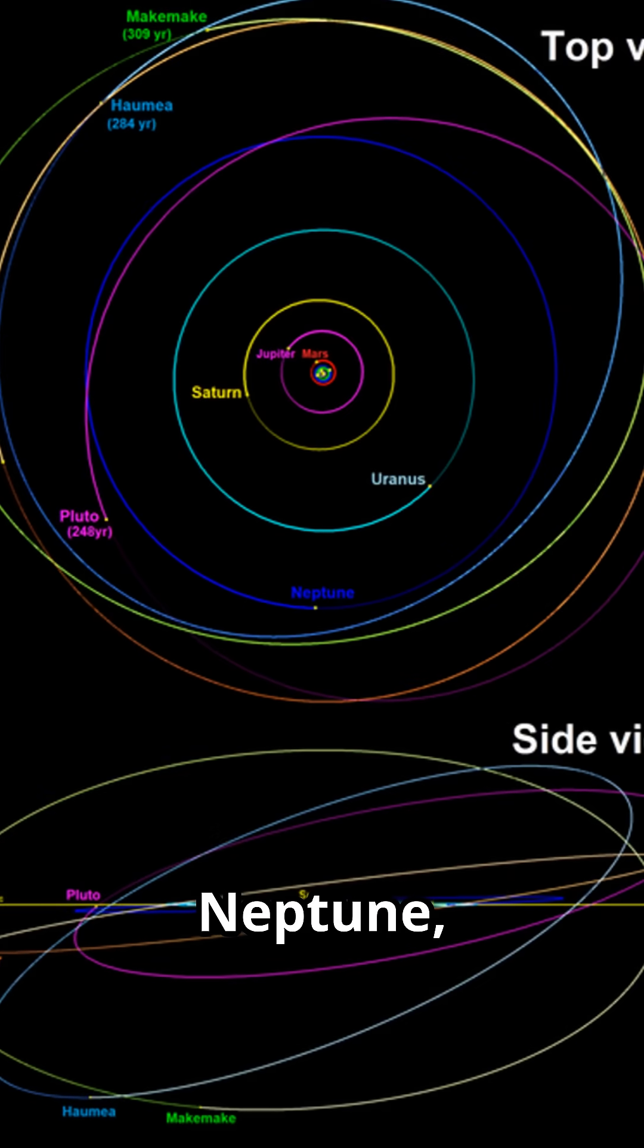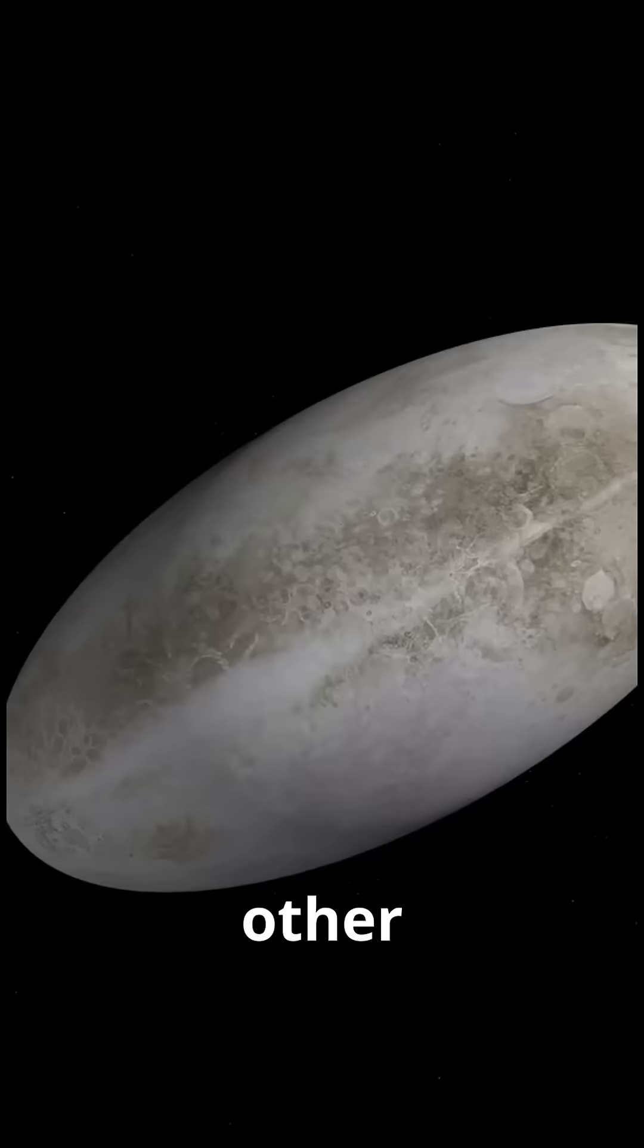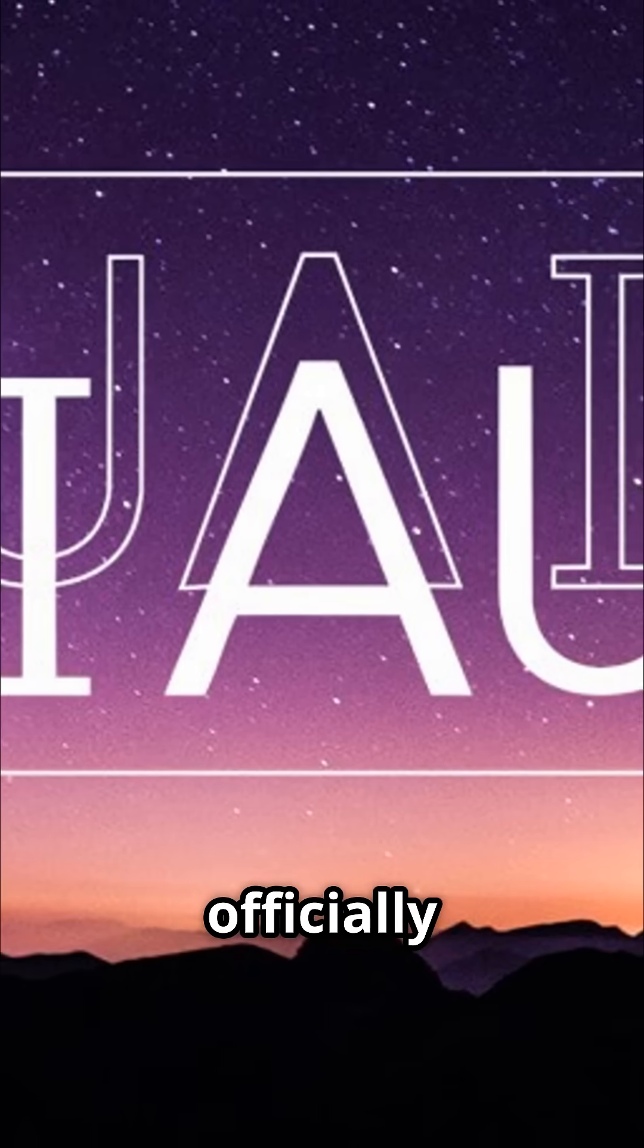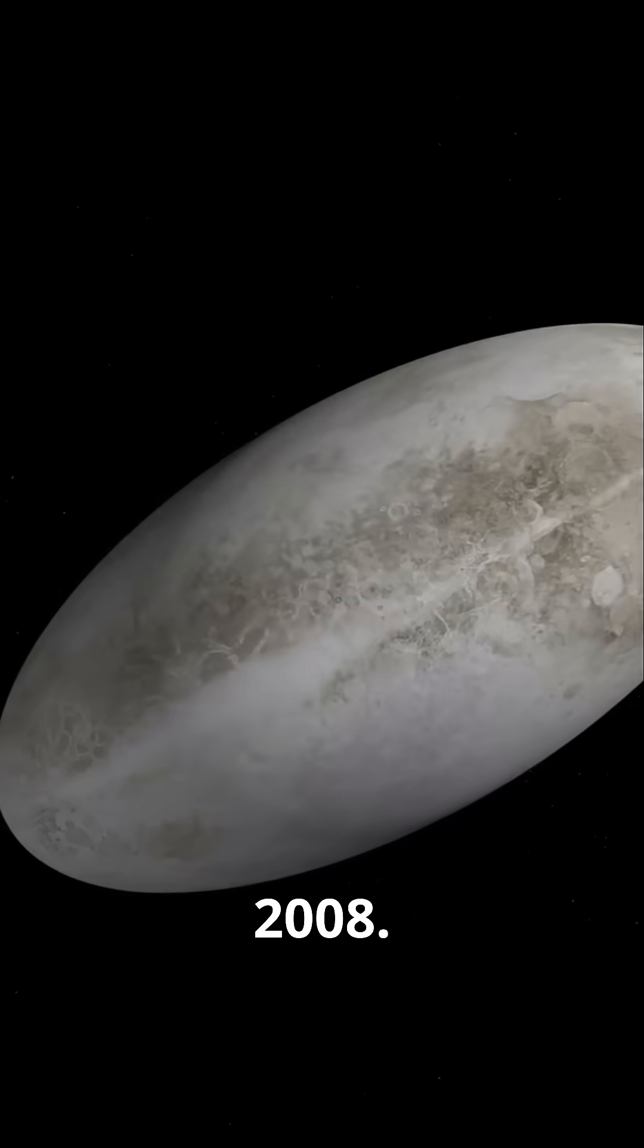Located in the Kuiper Belt beyond Neptune, Haumea is unlike any other dwarf planet. Discovered in the early 2000s, it was officially recognized by the International Astronomical Union in 2008.